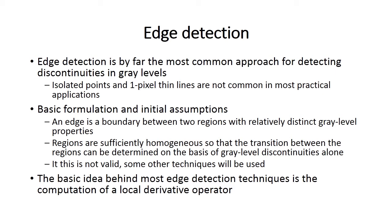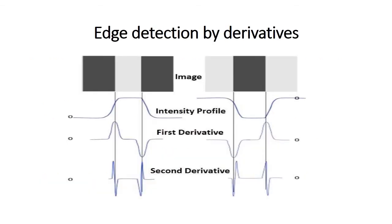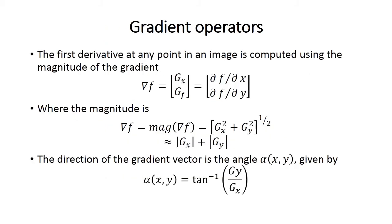The basic idea behind most edge detection techniques is the computation of a local derivative vector. From the given figure, the zero intensity profile and first derivative can be defined by differentiation of the function for edge detection, and the second derivative can be understood by the slope of the defined function.